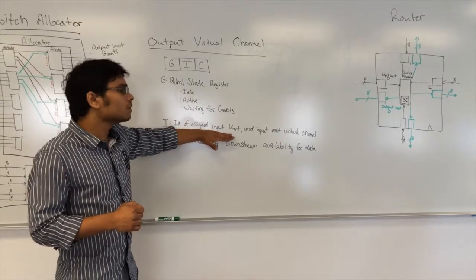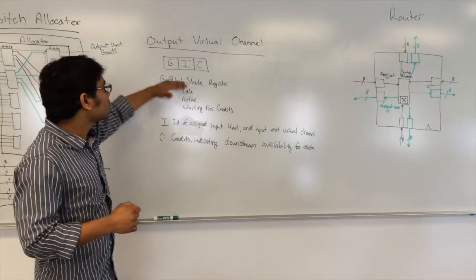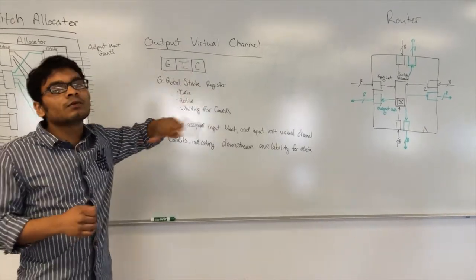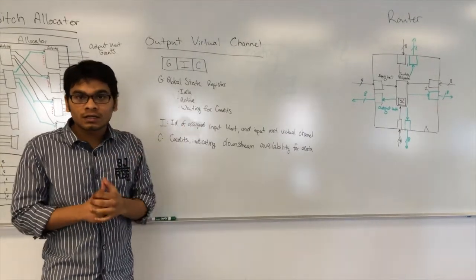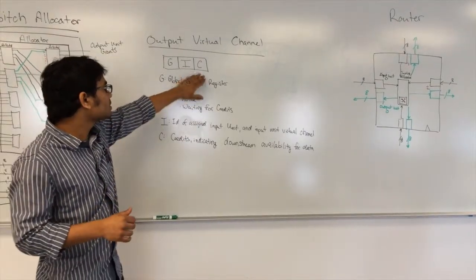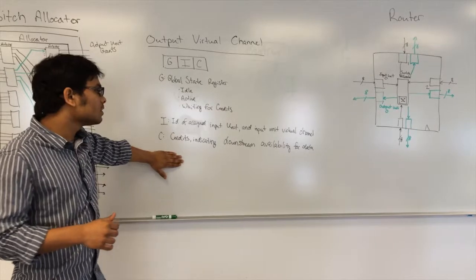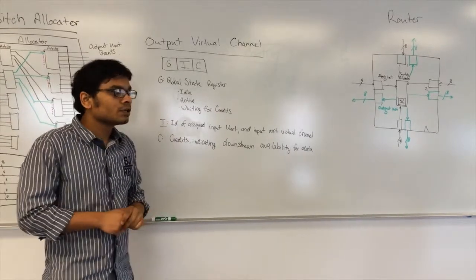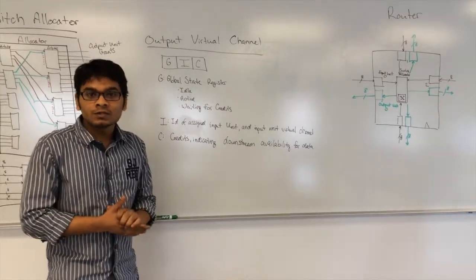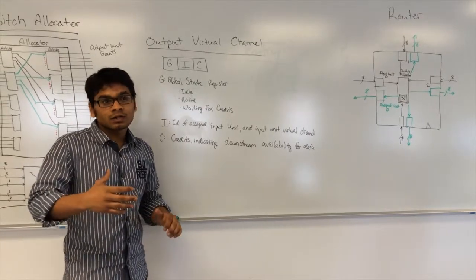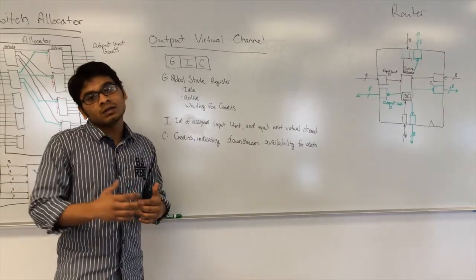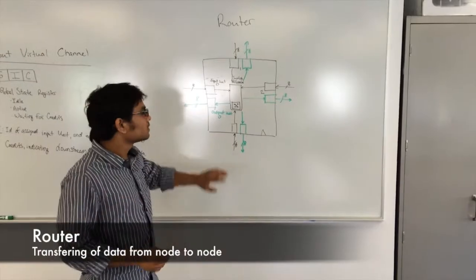This particular state register gets this information from the virtual channel allocator. And coming to the third field — that's the credits field. The credits field indicates the number of buffers available at the virtual channel that's downstream — that is, the input unit of the next router.